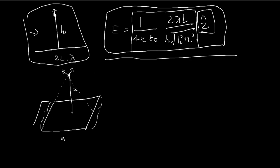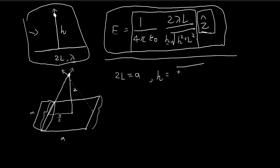Let's focus on the contribution from one side as an example. The parameters are a bit different here: in Griffiths' example the length is 2L, but in this case the length is a, so we substitute 2L = a. For H, the distance away from the center of the line, we can see that H is the distance from the center of the side to our point, which we find using the Pythagorean theorem. This part is a/2, and the height is z, so H equals the square root of (a/2)² + z², which is √(z² + a²/4).